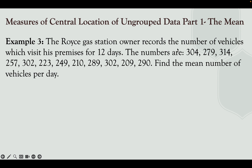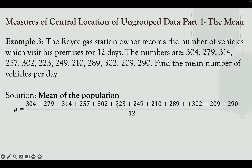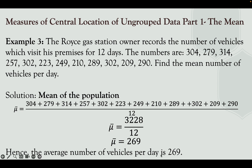Example 3: A Royce gas station owner records the number of vehicles that visit his premises for 12 days: 304, 279, 314, 257, 302, 233, 249, 210, 289, 302, 209, 290. Find the mean number of vehicles per day. Since all 12 days are covered, this is a population mean. The sum is 3,228 divided by 12, giving a mean of 269. Hence, the average number of vehicles per day is 269.